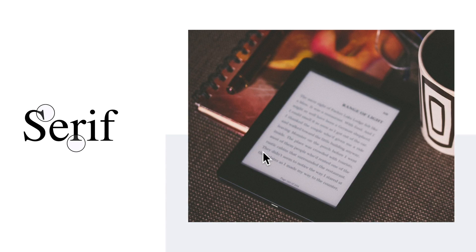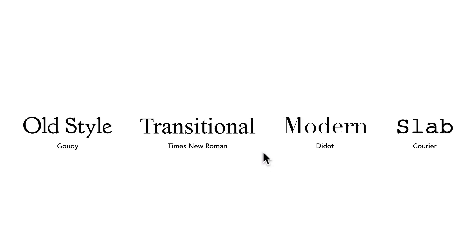You may be thinking: there are so many different types of serifs and some look so different from each other — and you're definitely right. Serifs are categorized into four categories. The first subtype is called old style. Old style serifs are generally referred to as humanist, and they are the oldest typefaces in the classification, dating all the way back to the mid-1400s. Typefaces in this category include Jensen, Centaur, and Gaudi. We're using Gaudi here — it's a really nice typeface.